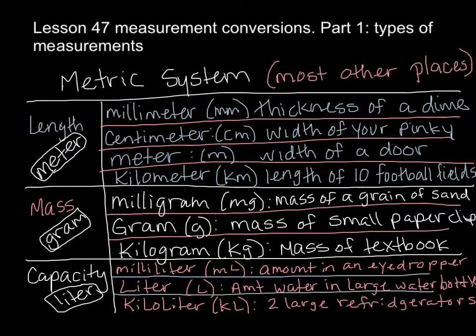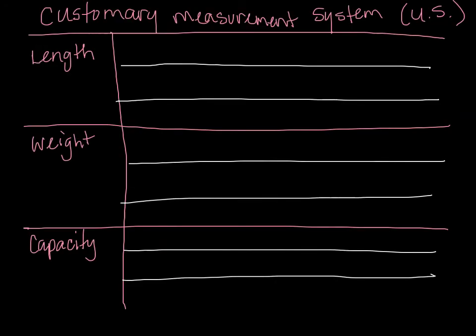Now let's look at the customary measurement system, which is what we use in the United States. A lot of other countries do not use this one, but this is what we're comfortable with — it should be a little easier for you to understand. Go ahead and draw this chart out: customary measurement system, with sections for length, weight, and capacity, each needing three lines.